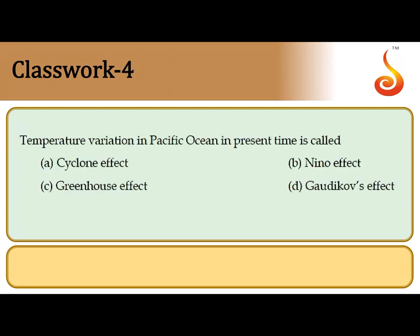The fourth question is about temperature variation in the Pacific Ocean. Along the western coast of South America, the oceanic water suddenly becomes warm periodically — this is referred to as the El Niño effect. It is associated with odd climatic changes linked to global warming and the greenhouse effect, so the correct answer is the second option: El Niño effect.